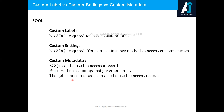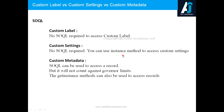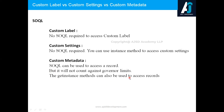From the SOQL perspective, do we really need SOQL to access custom label, custom settings, and custom metadata? No. Custom label can be easily accessed as Label.LabelName. Custom settings can be accessed using the getInstance() method. Custom metadata can also be accessed without SOQL, but if you do use SOQL to query custom metadata, those queries do not count against your governor limits.